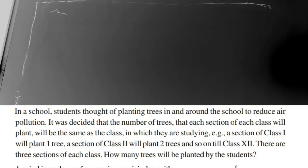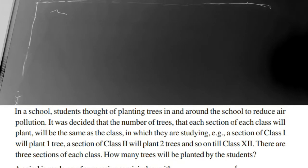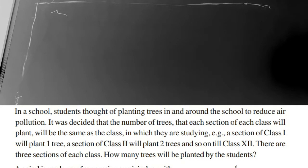In this video we are going to learn progressions exercise number 3, question number 11. In a school, students thought of planting trees in and around the school to reduce air pollution. It was decided that the number of trees each section of each class will plant will be the same as the class number. For example, a section of first class will plant one tree, second class two trees, and so on till class 12. There are three sections of each class. How many trees will be planted?